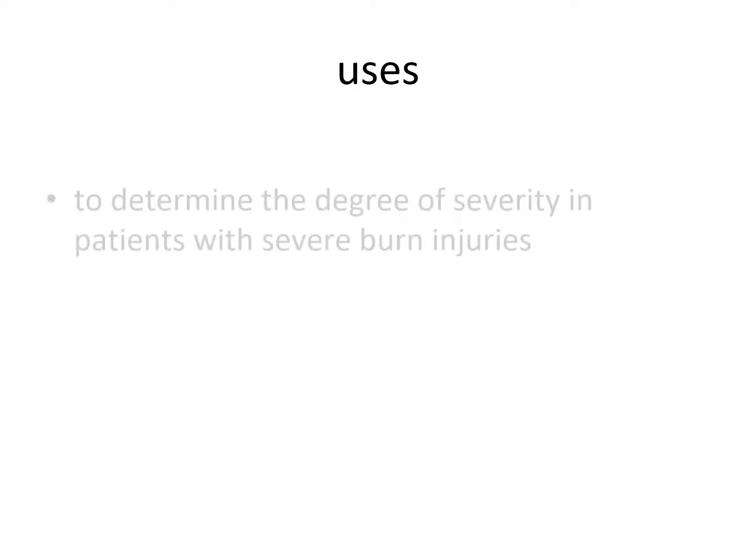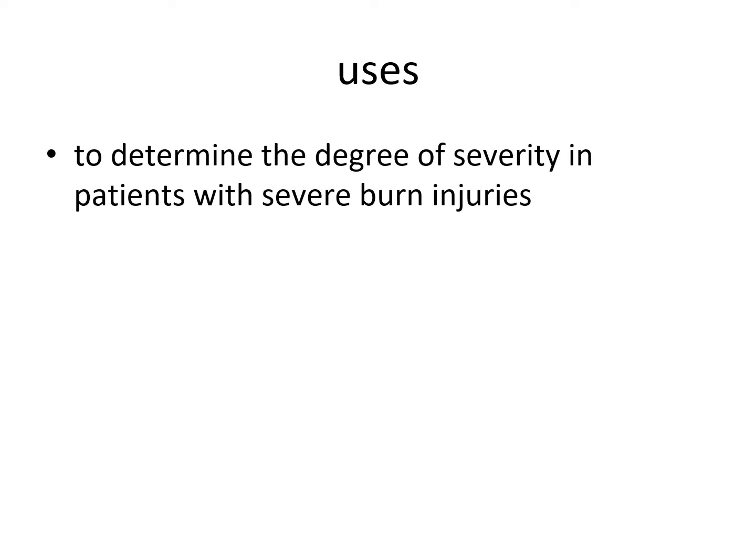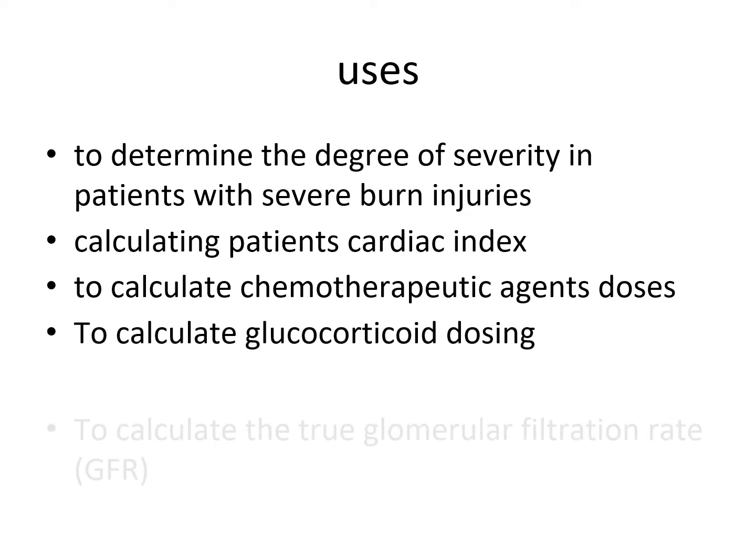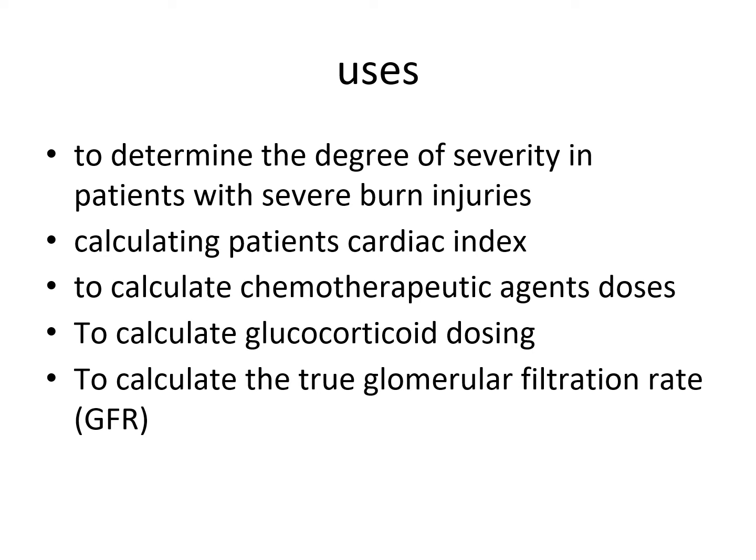Uses of body surface area: One is to determine the degree of severity in patients with severe burn injuries. Two, calculating patient cardiac index. Three, to calculate chemotherapeutic doses for some agents. It's used to calculate glucocorticoid doses. Five, it's used to calculate the true glomerular filtration rate by dividing the renal clearance by body surface area.